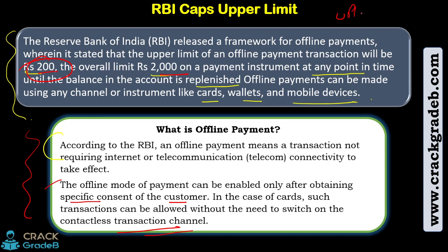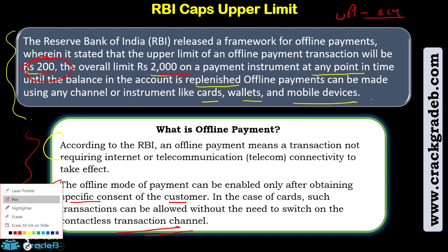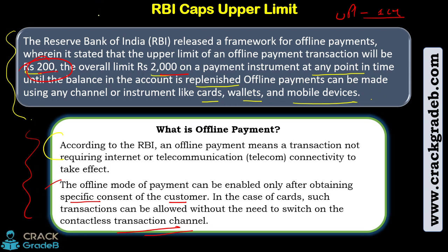Like in the case of UPI, the upper limit is set to Rs 1 lakh for a day. You can do any number of transactions until Rs 1 lakh or until you have exhausted your balance. If you have only Rs 50,000 in your account, you can't do Rs 1 lakh worth of transactions. If you are sending Rs 5,000 each time, at the 11th transaction it will be declined because you have exhausted your balance.